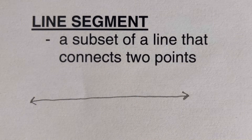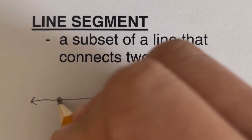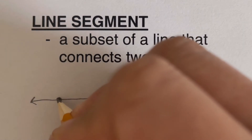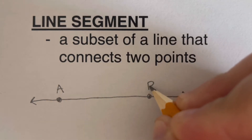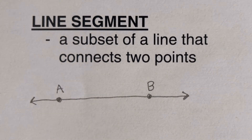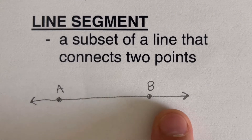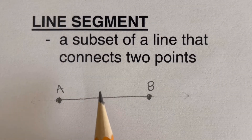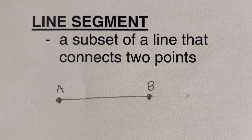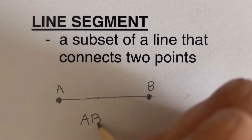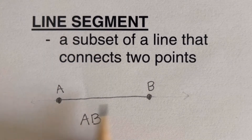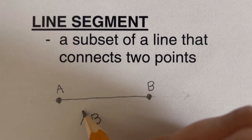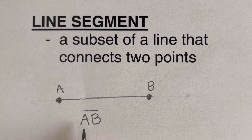When we say subset, it's part of the whole line. So we get this line right here, and we remember that a line is made up of points. So if we take two points on this line — let's say point A and point B — if we stop the line at each of these two points, we erase the other side that extends infinitely. This is what we call the line segment, read as line segment AB. We put those two letters, the endpoints, and then a line segment symbol on top.